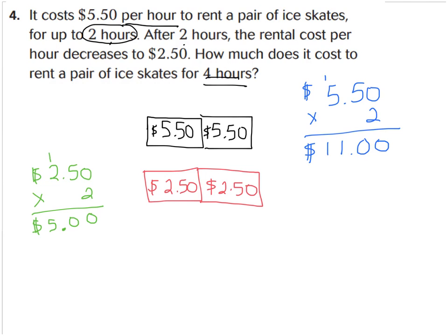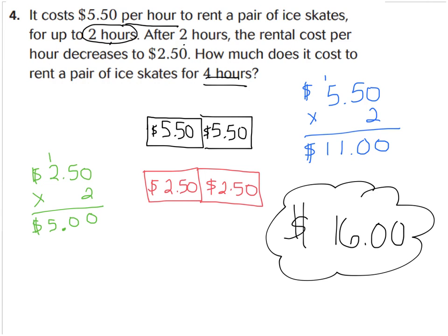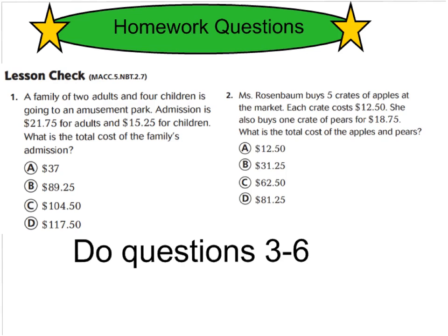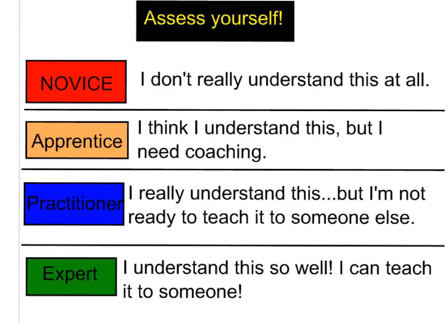For the first two hours it cost $11 to rent the skates. For the second two hours it was only $5. When you add $11 plus $5, the price for four hours of ice skating is $16. Go ahead and turn your GoMath book over to the next page and solve questions one and two on your own. Show your work — if you need extra room, use notebook paper and bring it to class tomorrow. Also don't forget to do questions three through six, and rate yourself at the top of the page on this topic of drawing a diagram to solve a multiplication and money problem.